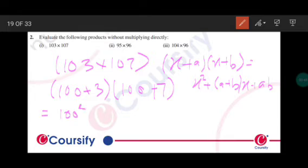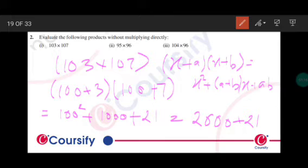So it will become 100 squared plus a plus b, 3 plus 7 that is 10, 10 into 100 that is 1000, plus a into b that is 3 into 7 that is 21. So this will become 10,000 plus 1000 plus 21. So this will become 11,021.